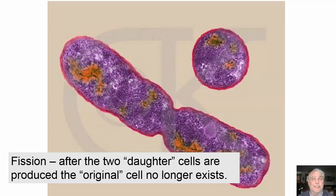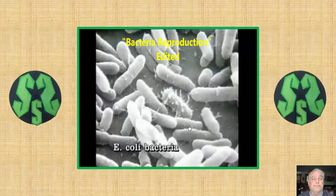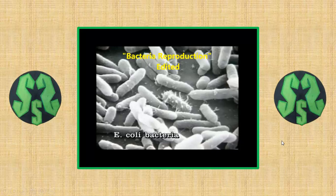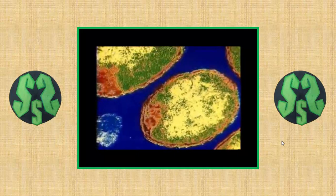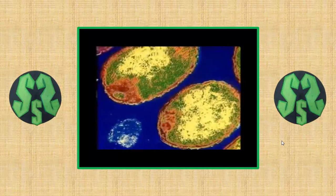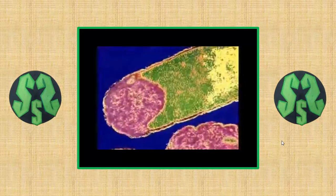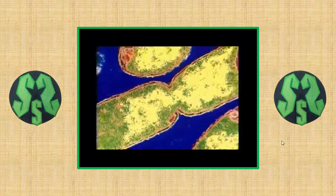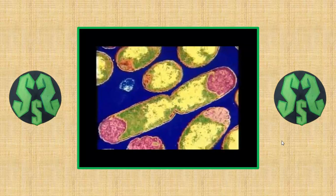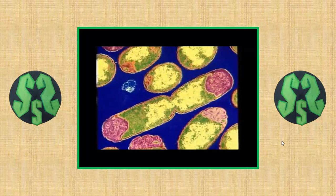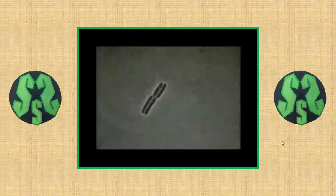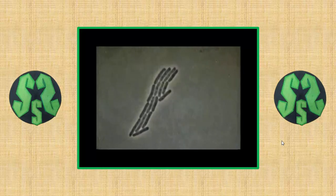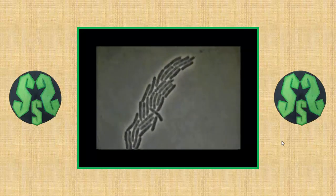Millions of these microscopic creatures inhabit our intestines. Bacteria are very simple creatures — unlike most cells, a bacterium doesn't even have a nucleus. When a bacterium reproduces, it pinches in the middle and the cell divides in two. Each of the two new cells is exactly like the original one. Bacteria can reproduce very rapidly; some types divide once every 20 minutes. At this rate, a single bacterium can become over a billion bacteria in less than 12 hours.